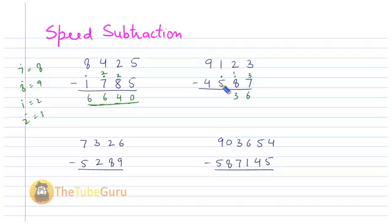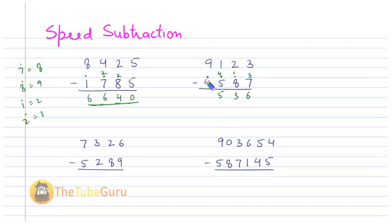Here I have one minus six — again not possible, so I take the complement of six, which is four. Four plus one is five, and I put a dot on the next digit. Then nine minus five-dot gives nine minus five equals four.